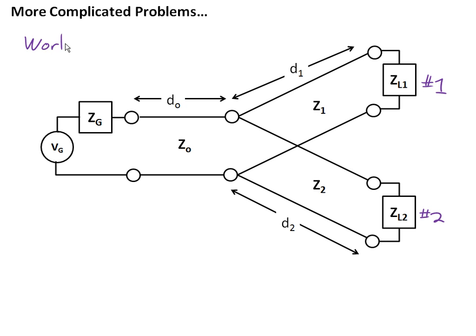And here's the trick. Write it up here. With transmission line problems, work backwards. That's what you have to do. You always start at the load and work your way toward the generator.